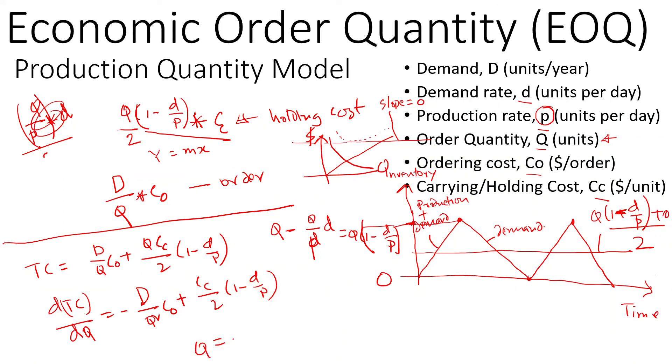If you solve for Q, you'll find the square root of 2·Co·D divided by Cc·(1 minus d by p). That will be our optimum level of inventory order where our cost will be minimized.